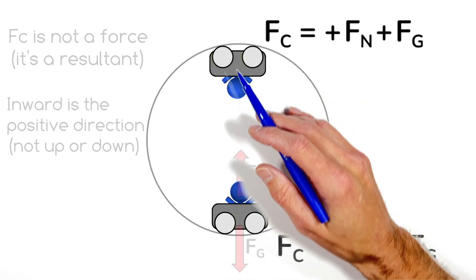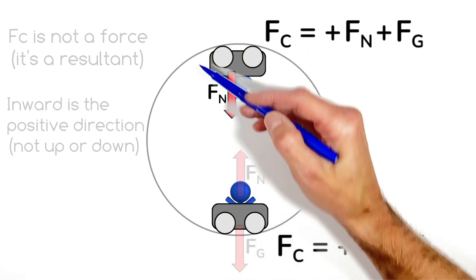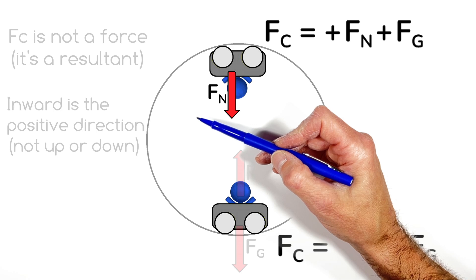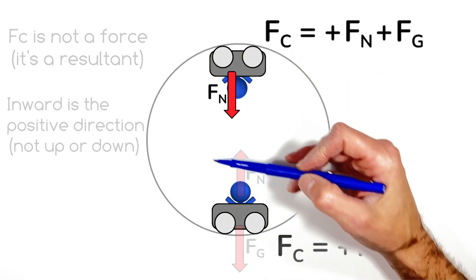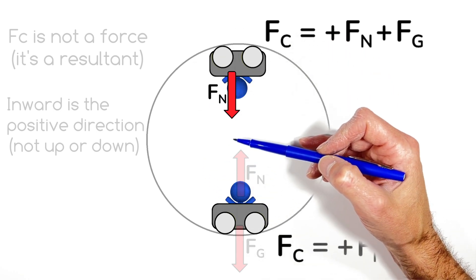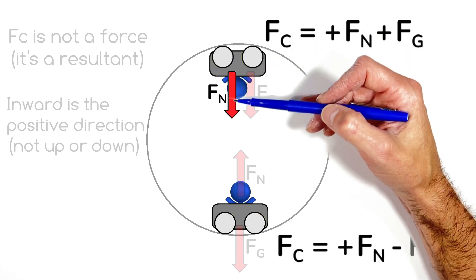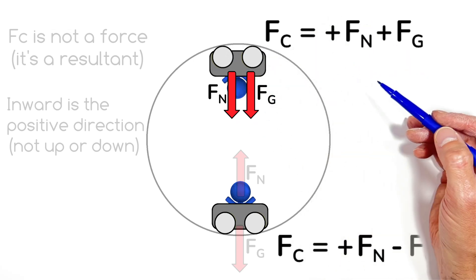But at the top of this loop here, the centripetal force is going to be equal to the normal force, which in this case is downward. So we're going to say that's positive because it's inward toward the center of the circle, plus, because again it's downward toward the center of the circle, the force by gravity.